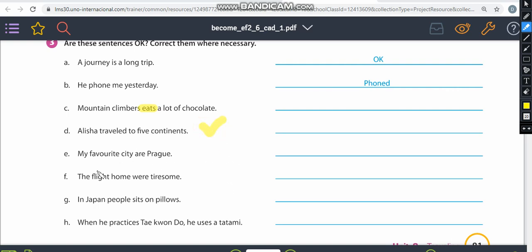My favorite city are Prague. What? My favorite city are Prague. So I cannot use are because the sentence is on the singular form. My favorite city is Prague.